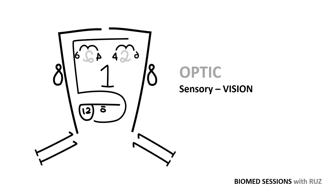Cranial nerve 2, also sensory, is the optic nerve, and is involved in vision.